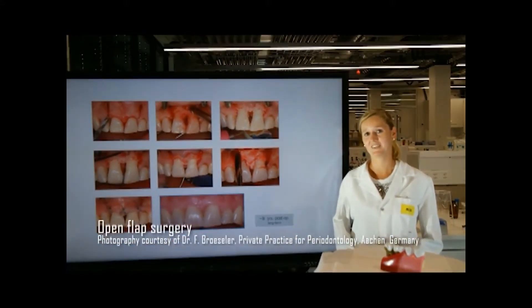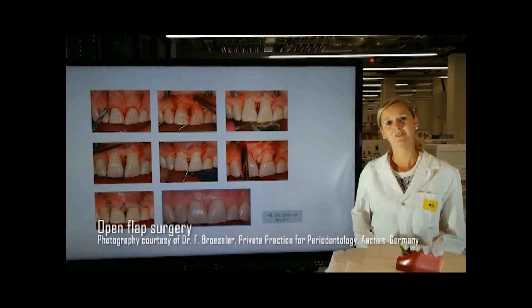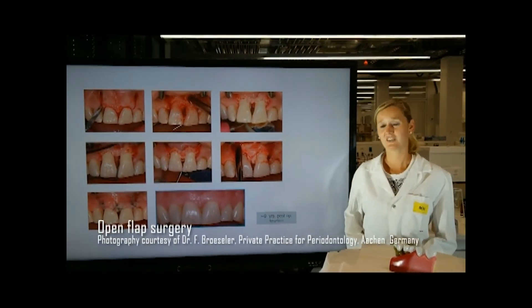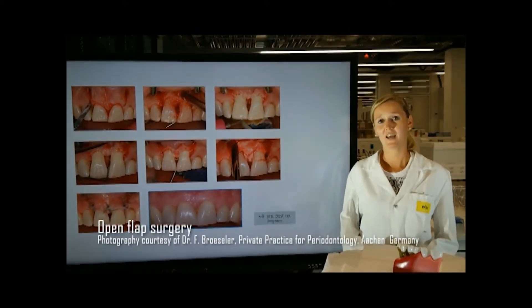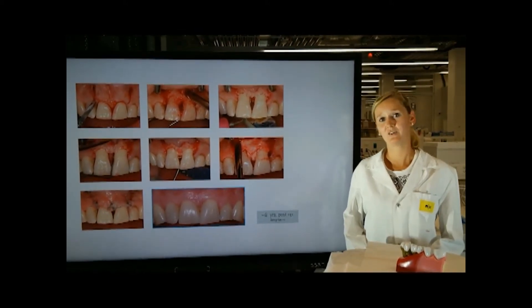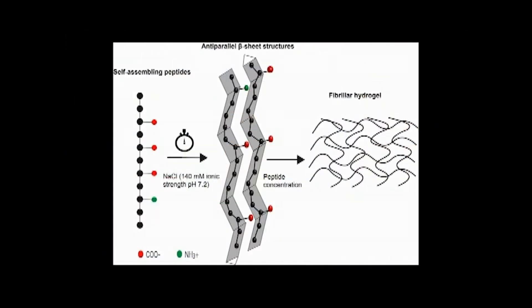As an advanced treatment strategy, an open flap surgery is often applied which can be very painful to patients. But in case of an early disease state, it is also possible to regenerate the destructive tissue structure such as the alveolar bone by use of fibrillar hydrogels that are able to mimic the natural extracellular matrix and can be applied by minimally invasive techniques.